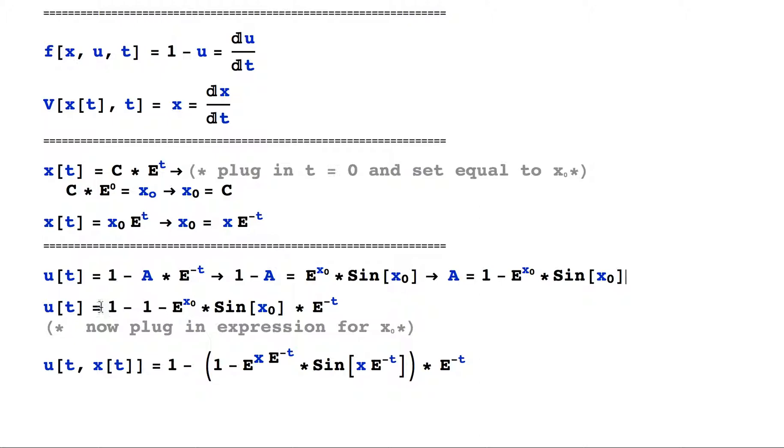And we plug that in to our expression from above, and this is our function. And now to get the fully two-variable expression, we simply take the value that we found for x_naught above and plug that in for x_naught, and we have our solution.